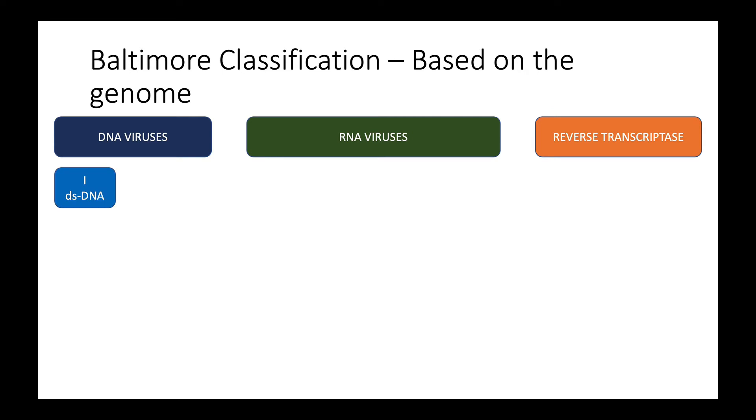Class one is double-stranded DNA viruses. Class two are single-stranded DNA viruses. Class three are double-stranded RNA viruses. Class four are single-stranded RNA viruses positive sense. Class five are single-stranded RNA viruses with negative sense. Class six are single-stranded reverse transcriptase RNA viruses. Class seven are double-stranded reverse transcriptase DNA viruses.